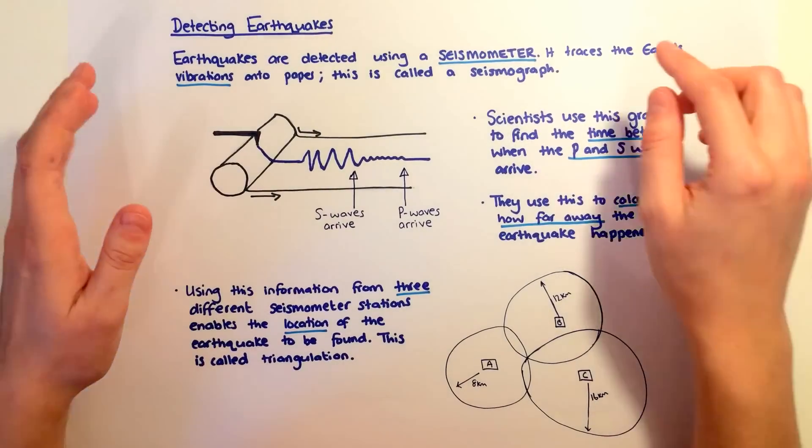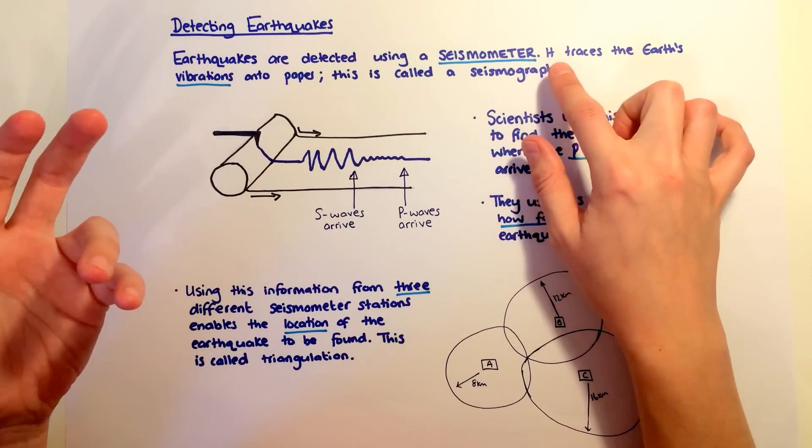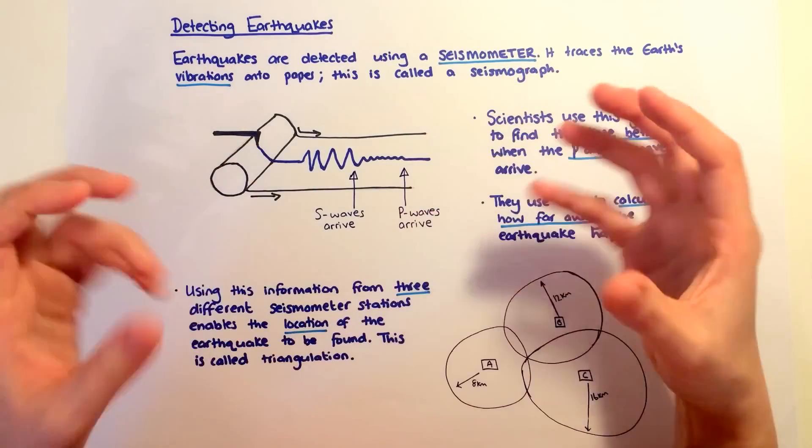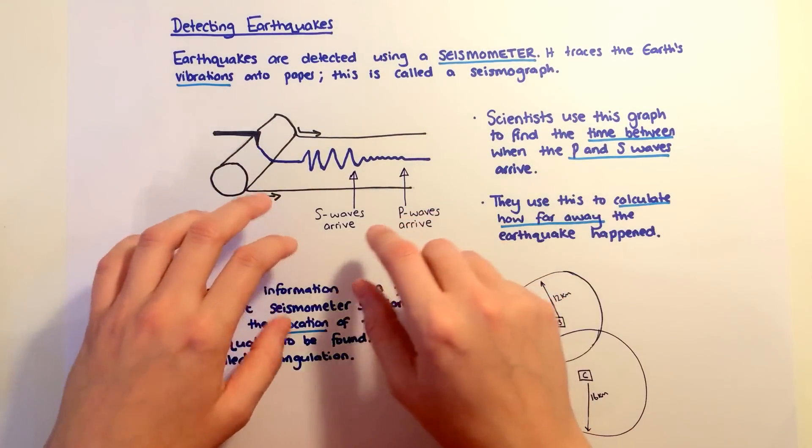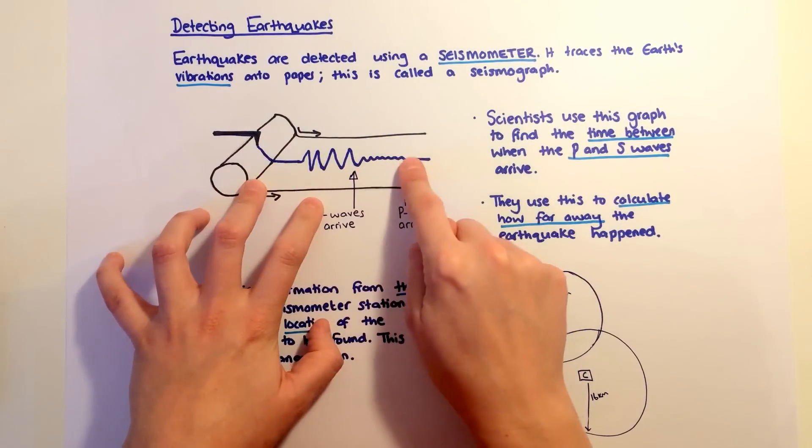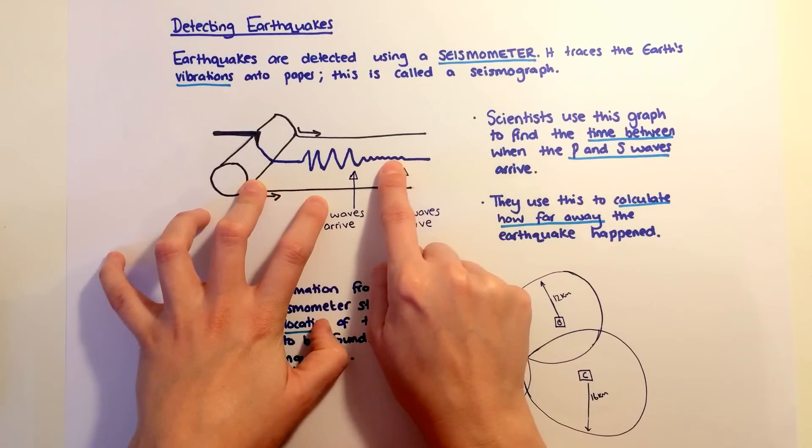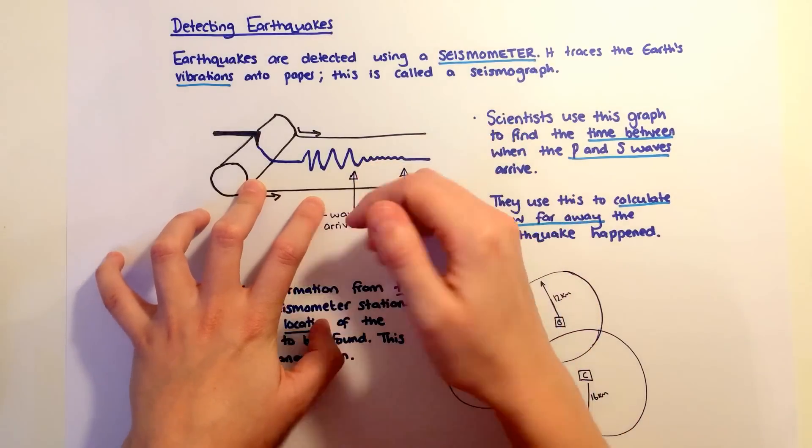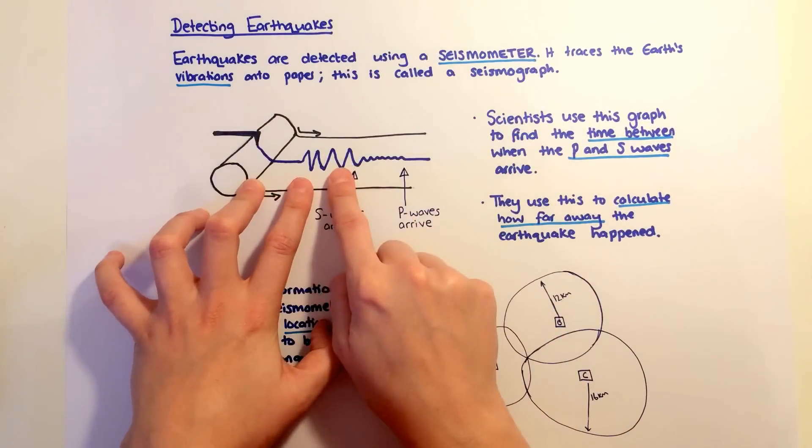How do we detect earthquakes? We use a machine called a seismometer that picks up on those waves in the Earth's surface and produces a print called a seismograph. When the waves happen, we get the P waves happening first, which are smaller vibrations, and then the much larger S wave vibrations.